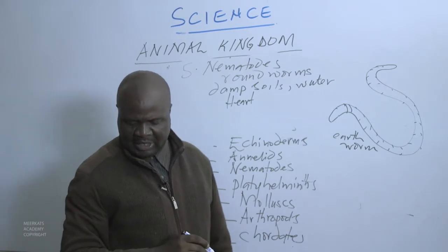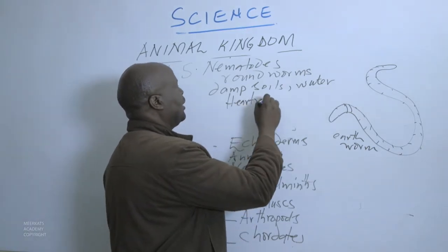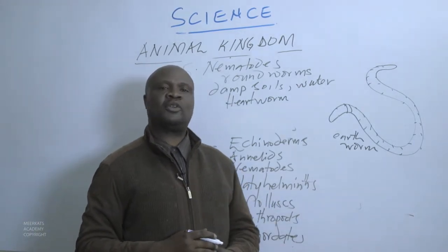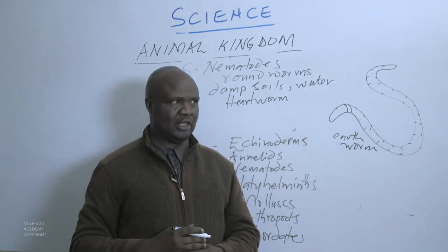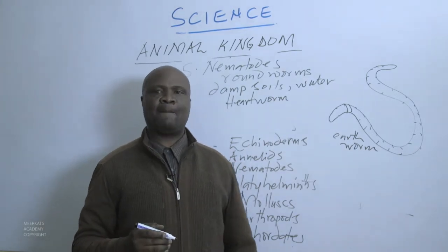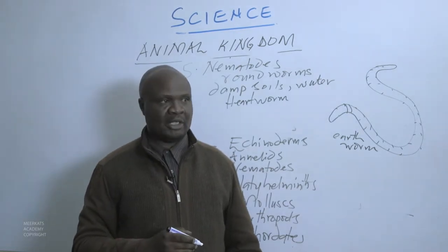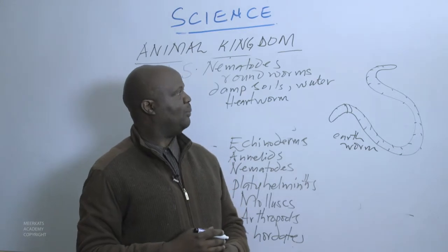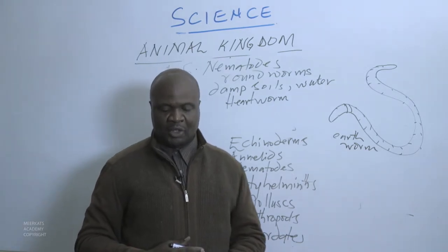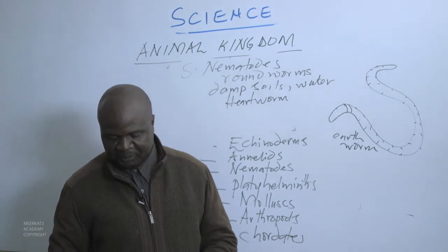Nematodes can be found within the hearts of some animals — we call them heart worms. Most heart worms are found within dogs. If the dog is not treated immediately, they can harm that particular dog and even cause death. If you give the dog a proper pesticide, you can do away with these heart worms that have decided to use the heart of the dog as their habitat.